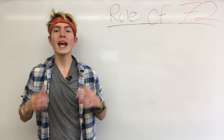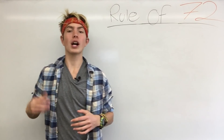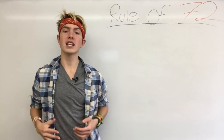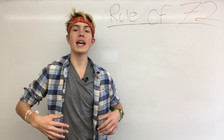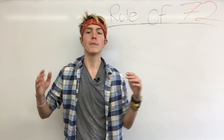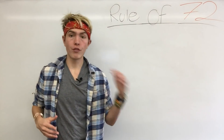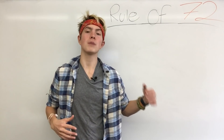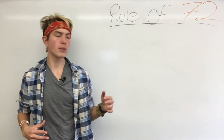The rule of 72 is a way for you to figure out exactly how long it's going to take to double your money with a certain investment, or how big of an investment you have to make in order to get a 100% return on your investment over a given time period. It's a very useful tool that I use regularly to determine how long it's going to take to double my money with a certain investment.